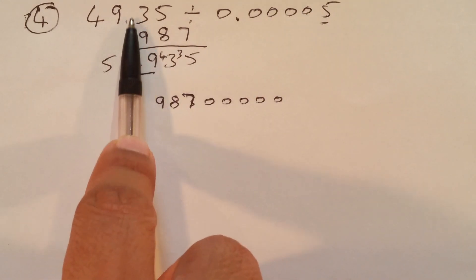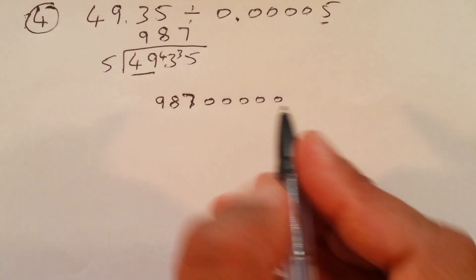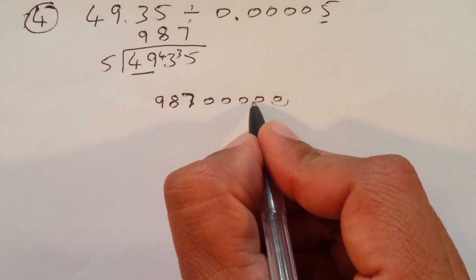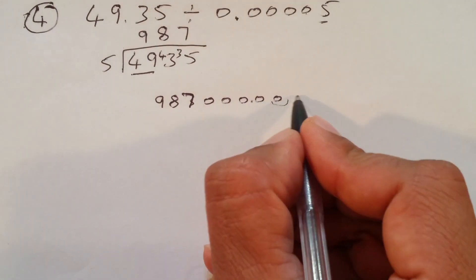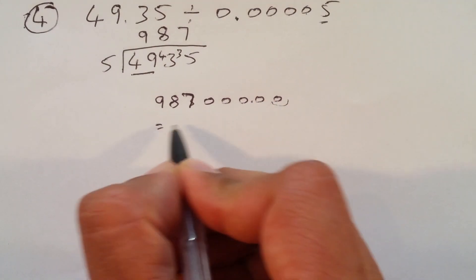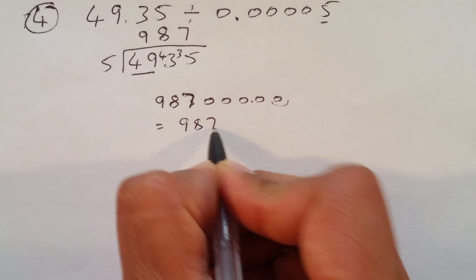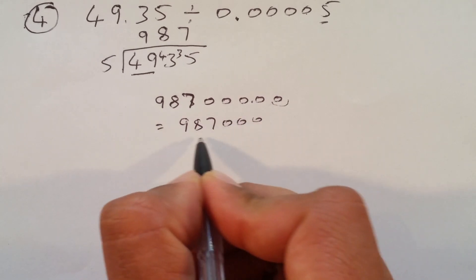Come back on the left side. Again, after decimal how many numbers we have? 1 and 2. Put the decimal back after 2 numbers. 1, 2. That's gone. So, the final answer will be 9, 8, 7, 1, 2, 3. Done.